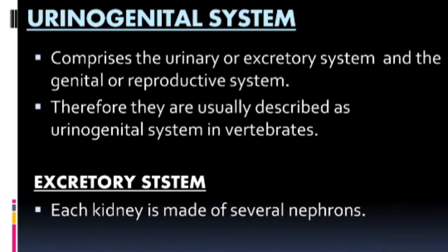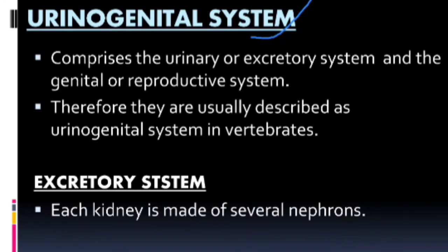In vertebrates, the two systems sometimes share a common opening. The urino-genital system thus comprises the urinary or excretory system and the genital or reproductive system, and they are usually described together as the urino-genital system.